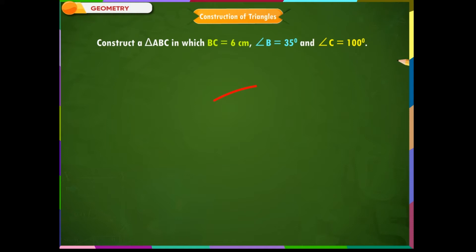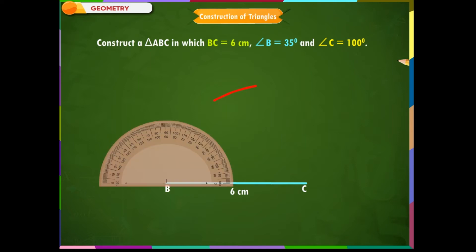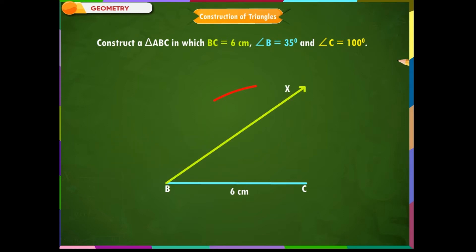Step 1: Draw a line segment BC equal to 6 cm. Step 2: Angle B is given as 35 degrees. Place the protractor on point B and mark 35 degrees. Draw angle CBX by drawing a ray from B to X as shown on the screen.